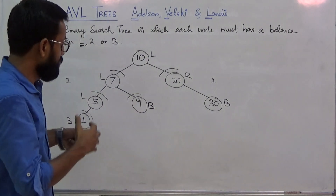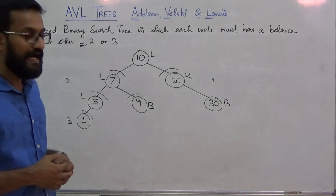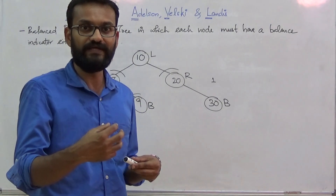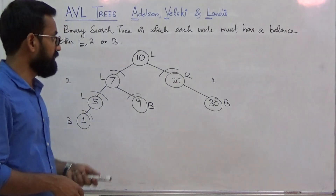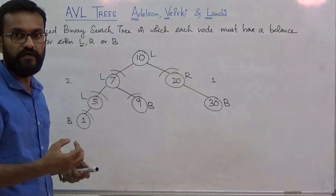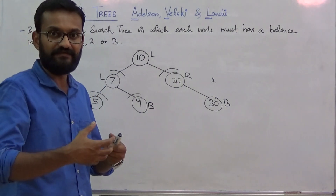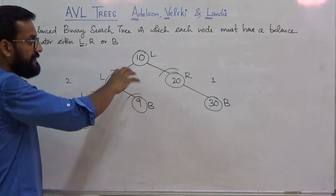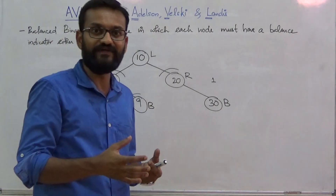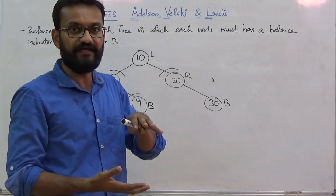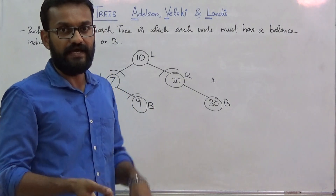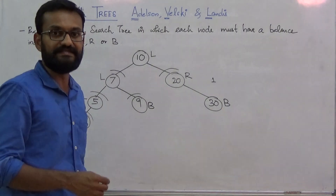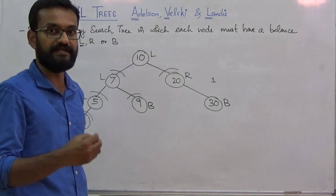If you analyze this tree, the height difference between the left subtree and right subtree of each and every node is at most 1. You cannot find a subtree with a height difference greater than 1. For each and every node, the left subtree and right subtree will have a height difference of at most 1, and in that way this tree balances its height. That is the reason for calling an AVL tree a height-balanced tree. So, an AVL tree is an example of a height-balanced binary search tree.